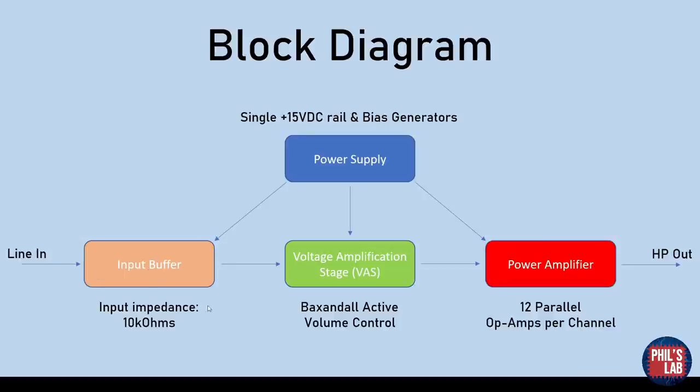In the audio signal chain starting on the left, we have an input buffer which takes the line-in voltage level and presents a fairly high input impedance which is audio standard of about 10 kilo ohms. We feed that signal into the voltage amplification stage which provides us gain up to about 15 decibels, and that's actually using a Baxandall active volume control which I'll be explaining further in the video.